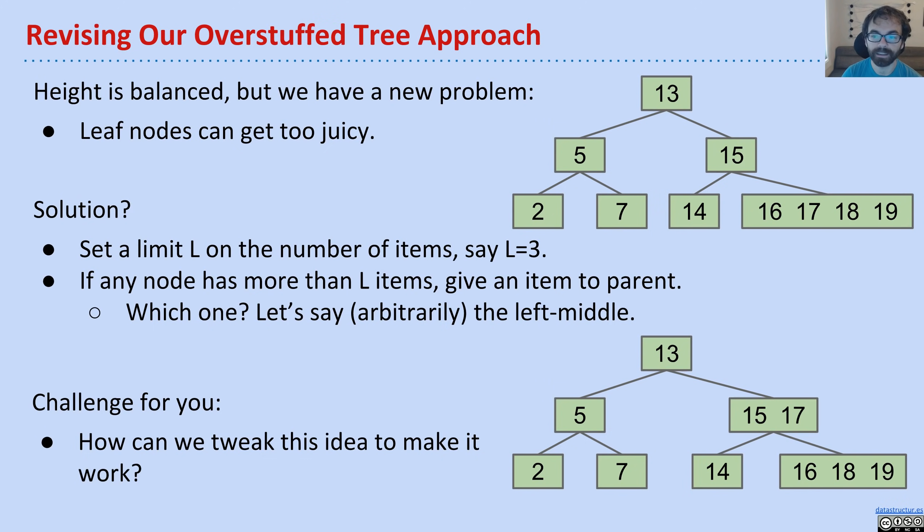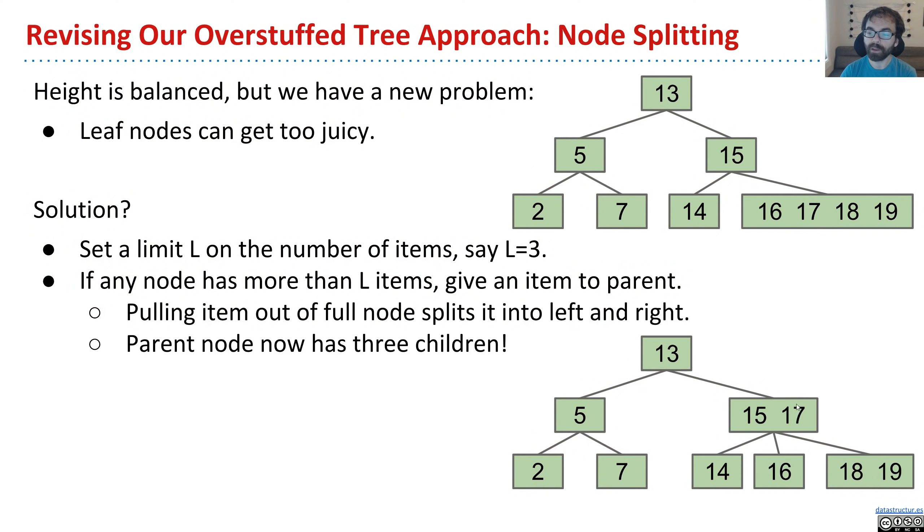So the traditional idea and what brings us the B-tree is that when a node goes up, we are going to actually split the existing node. So the idea is that it's like your thing is so juicy that you rip part of it out. And that causes the node to split into two pieces.